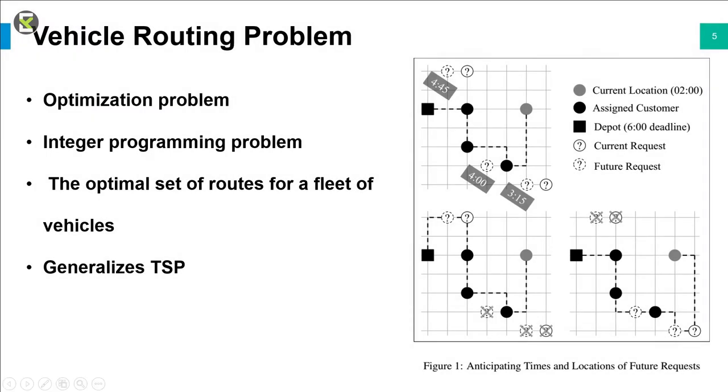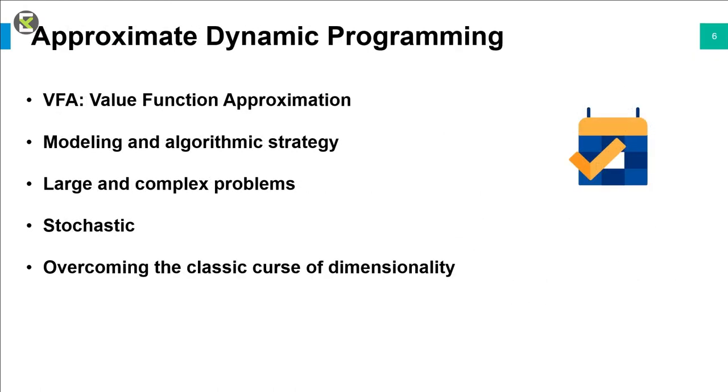Now let's look at the vehicle routing problem. Vehicle routing problem is a combinatorial optimization and integer programming problem, which asks what is the optimal set of routes for a fleet of vehicles to traverse in order to deliver to a given set of customers. It generalizes the well-known traveling salesman problem.